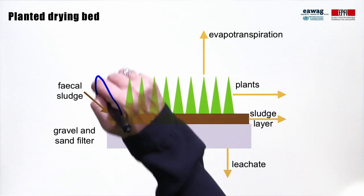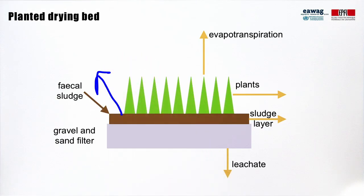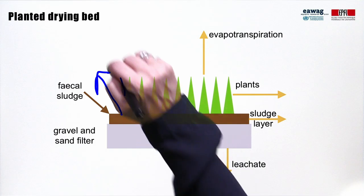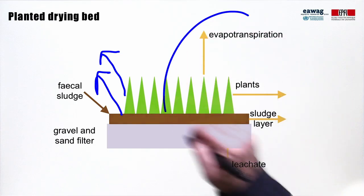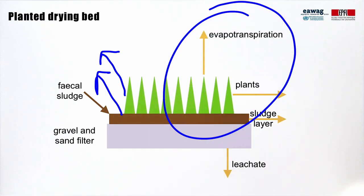Evaporation occurs when water is released into the air as a vapor. Transpiration occurs when plants release vapor to the air as part of their metabolic processes. Evapotranspiration is the combination of these two processes. Evaporation can also occur from other sources of heat, such as thermal drying, or even somewhat from other physical processes such as centrifugation.